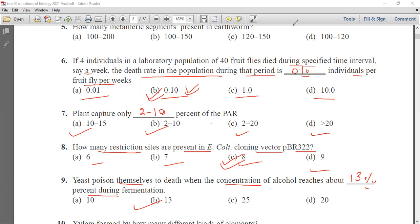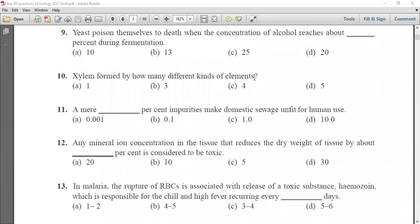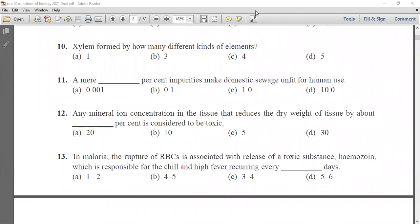Xylem formed by how many different kinds of elements? Options are 1, 3, 4 and 5. Xylem is formed by four kinds of different elements. A mere dash percent impurities made domestic waste and sewage unfit for human use. 0.01, 0.1, 1 or 10. The correct answer is 0.1 percent. Any mineral ion concentration in the tissue that reduces the dry weight by about dash percent is considered toxic. Options: 20, 10, 5 or 30. 10 percent is considered toxic.